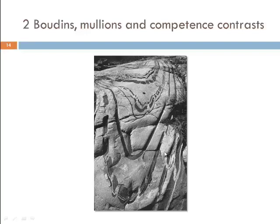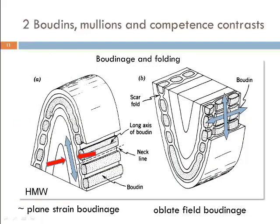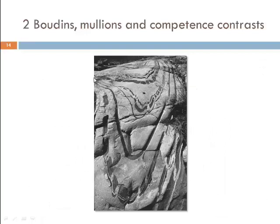An important field consideration is that folds can overprint already Boudinaged layers. This is recognizable by looking at hinge zones: if you see Boudins in the hinge of a fold, that tells you the Boudinage is not related to the folding, because neither normal Boudinage nor chocolate block Boudinage will form Boudins in the hinge of a fold that is related to the Boudinage process. So watch out in the field — Boudins in fold hinges mean you are folding already Boudinaged layers, and the Boudinage itself has nothing to do with the folding process.